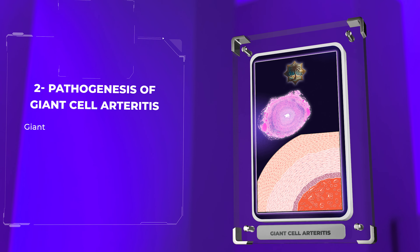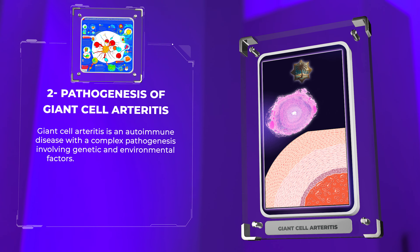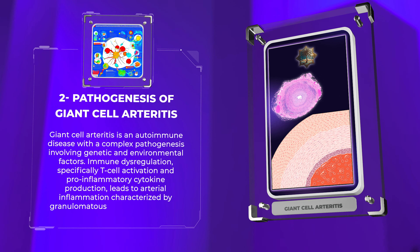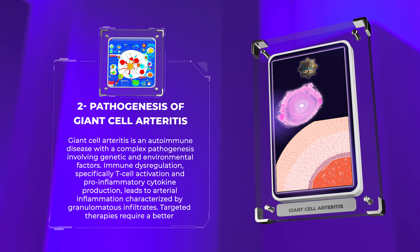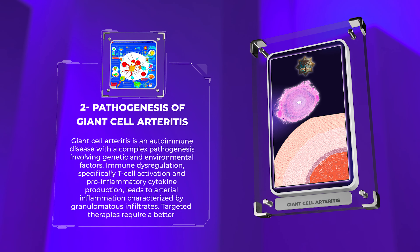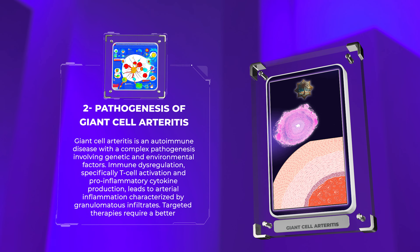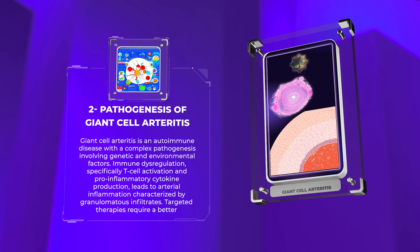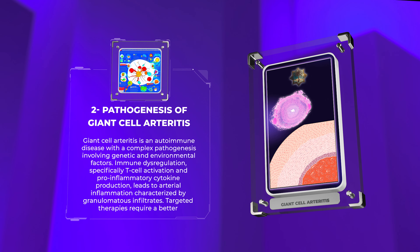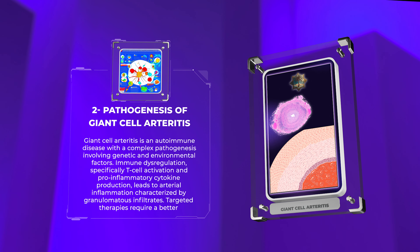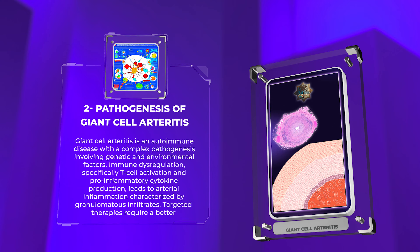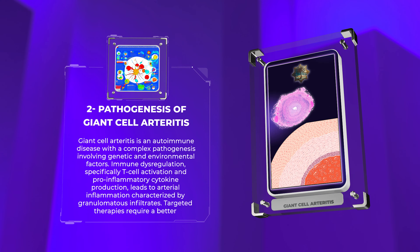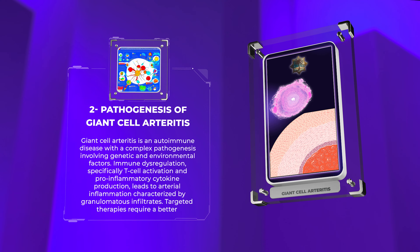Giant cell arteritis is an autoimmune disease with a complex pathogenesis involving genetic and environmental factors. Immune dysregulation, specifically T-cell activation and pro-inflammatory cytokine production, leads to arterial inflammation characterized by granulomatous infiltrates. Targeted therapies require a better understanding of these mechanisms.